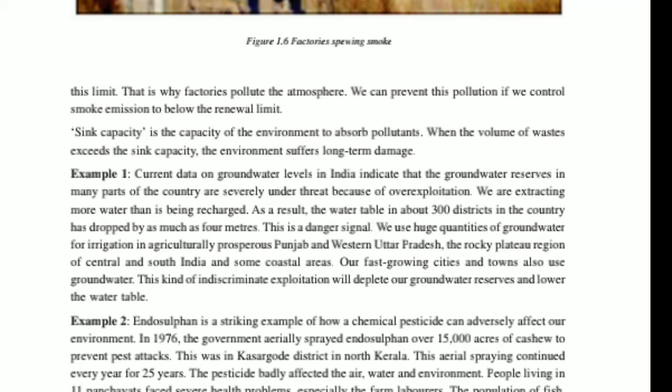Huge quantities of water are used for irrigation and agriculture in prosperous Punjab and Western Uttar Pradesh, the rocky plateau regions of Central and South India, and some coastal areas. Our fast-growing cities and towns also use groundwater. This kind of indiscriminate exploitation will deplete underground resources and lower the water table.